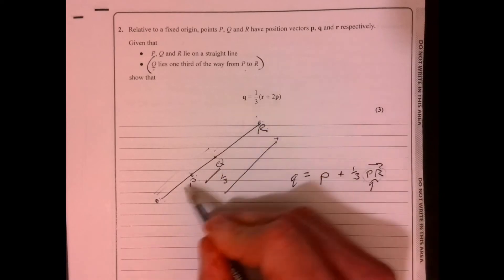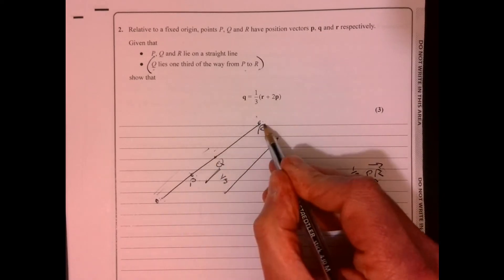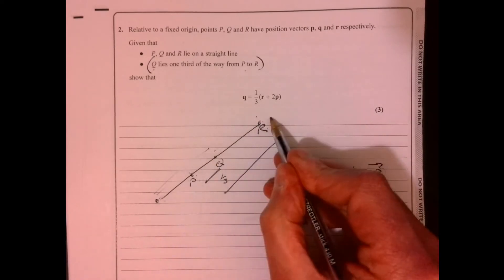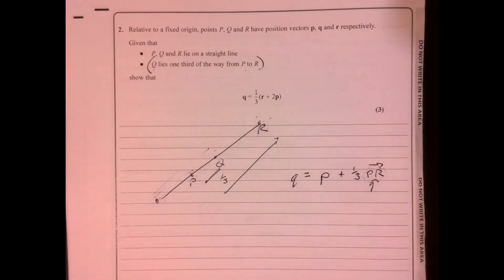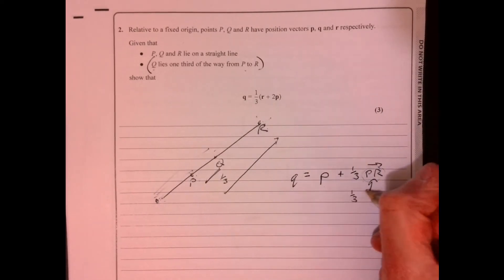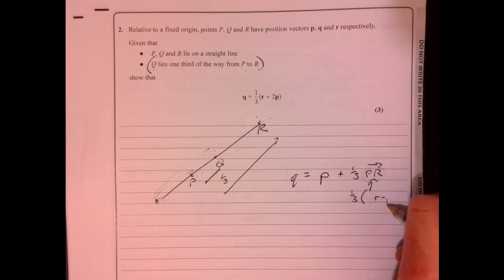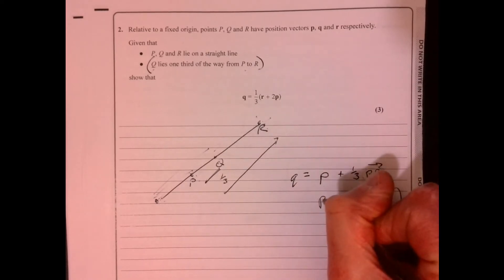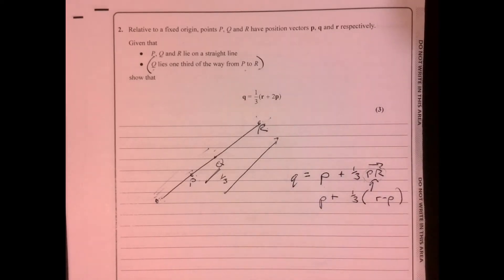OK, so it's this. We just want this part. So it's this, take away this. So that's going to be one third of R minus P. There we go.